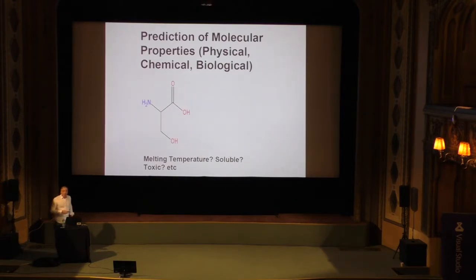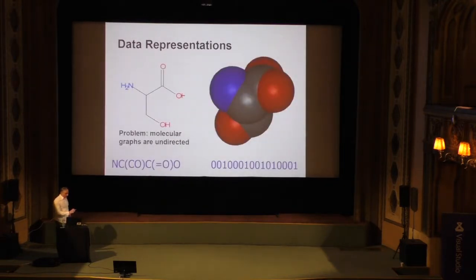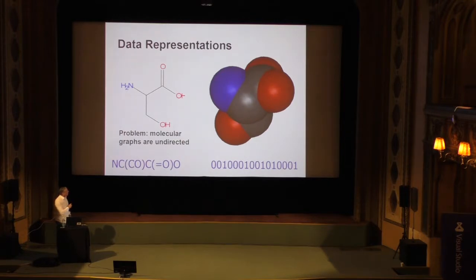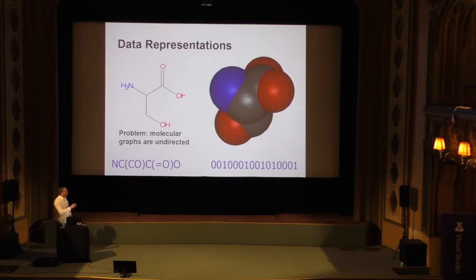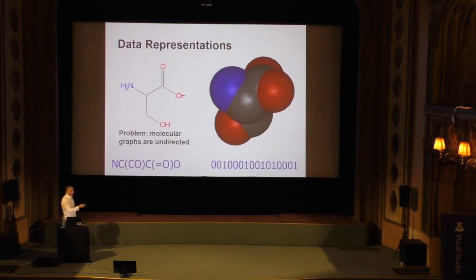Let's apply them to small molecules. In organic chemistry, small molecules typically come to you as a graph, and you want to predict physical, chemical, and biological properties. You can represent molecules in many different ways: as graphs, as SMILES strings, as fingerprints — long sparse binary vectors — or as 3D objects giving x, y, z coordinates of nuclei. The fingerprint representation is the only one of fixed length; all others are variable and require recursive neural networks.